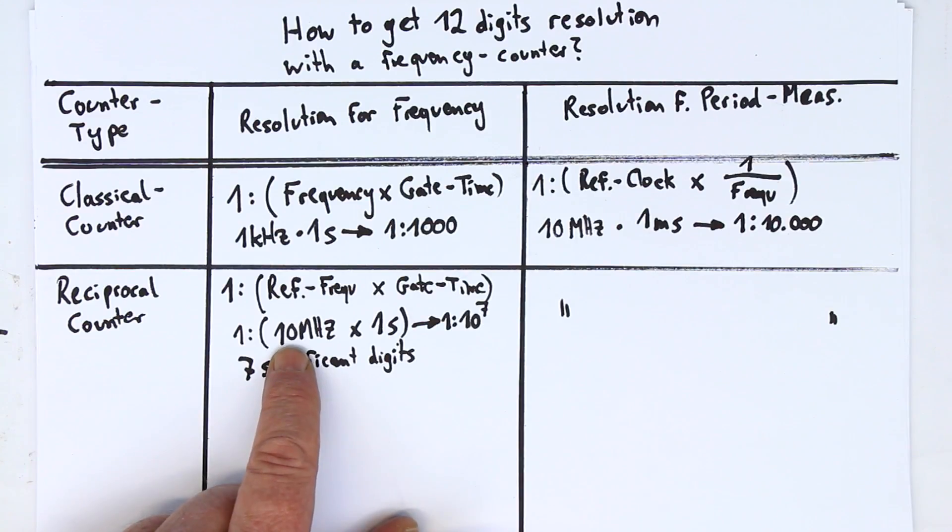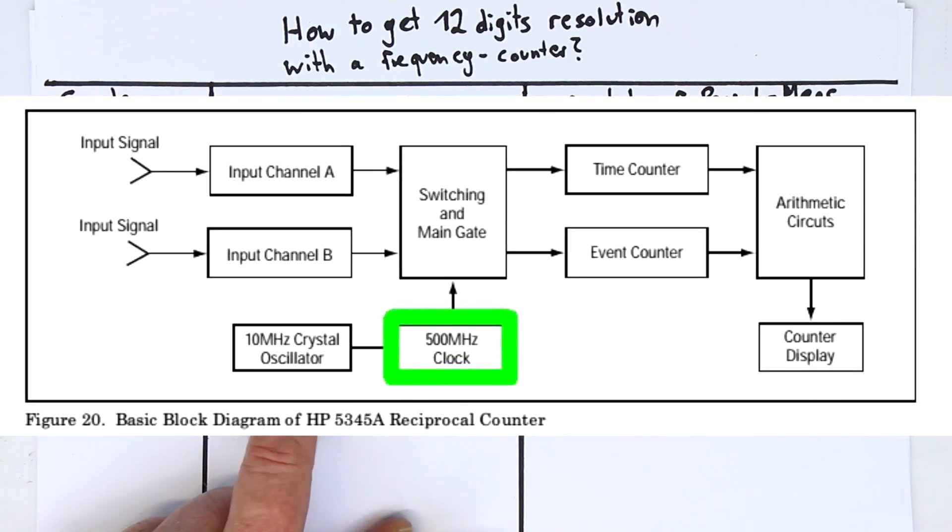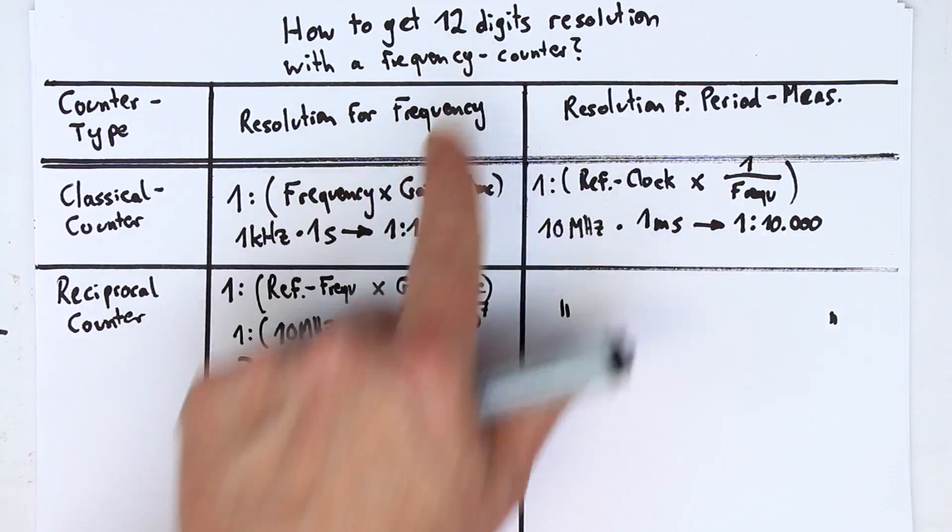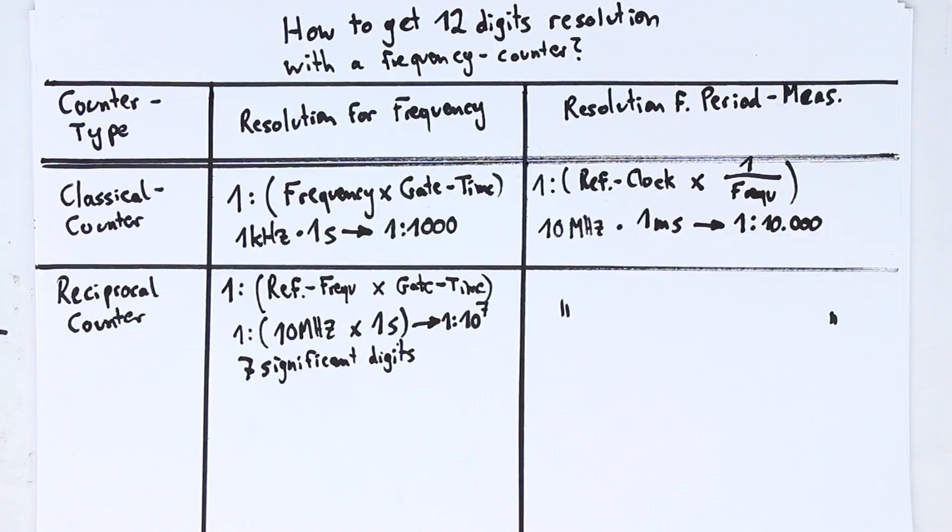Then we would get a 50 times better result, but then you also would need very fast dividers and counters to deal with 500 megahertz, but they are available. So, that would be one reason to get somewhere in the region of 9 digits. But how did they reach 12 digits? That was the thing that puzzled me a lot, until I finally found a classical application note from HP, where everything is explained.